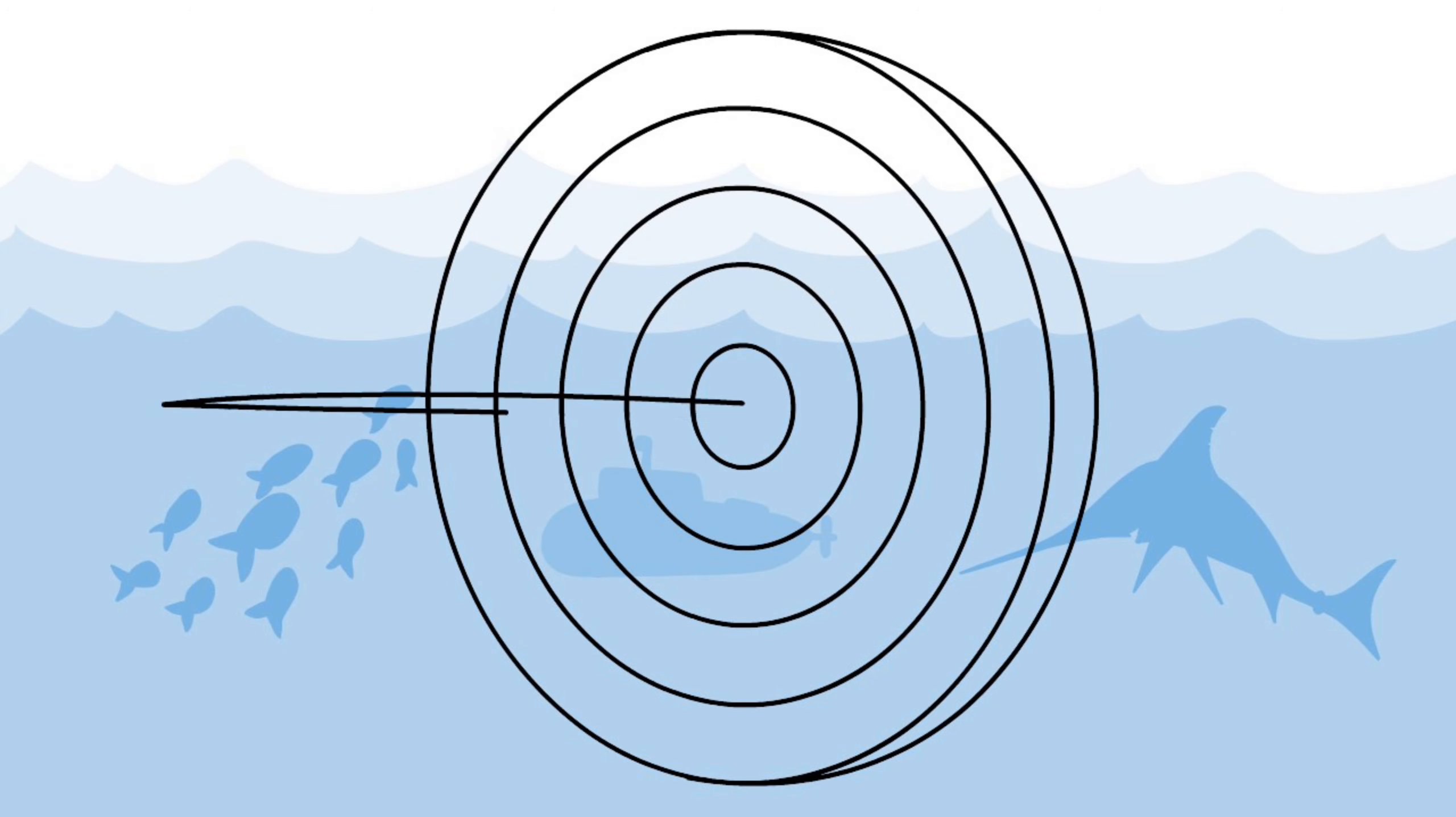To build a trust model, you can use the following mental model. Let's call it the 5 Waves of Trust, because when a drop falls, the water expands and goes from the inside out.